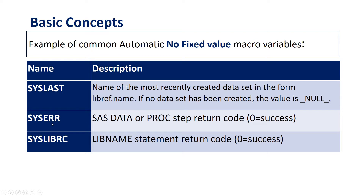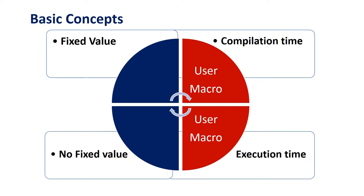It's the same for SYSERR. If I submit the program and call this macro, if there are no errors in my program this value will show 0. But if I have errors I will have something different from 0, and also for library references. This value changes, that's why we call it a non-fixed value. That covers automatic macro variables.